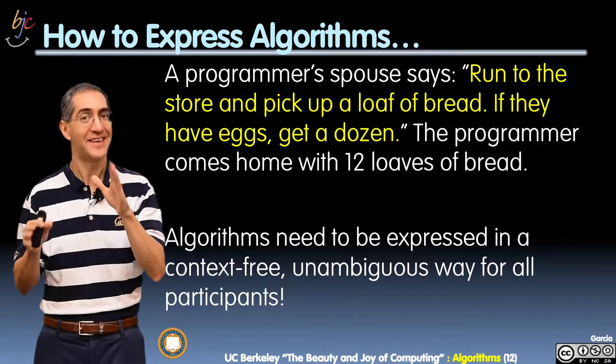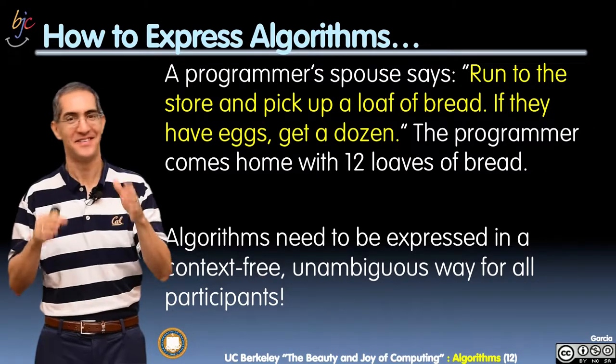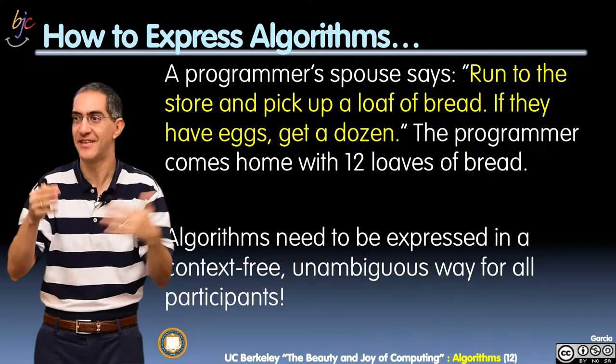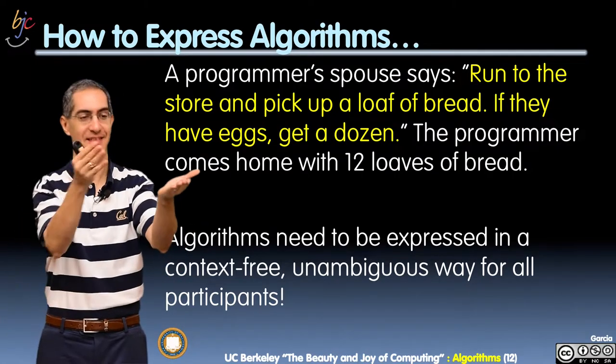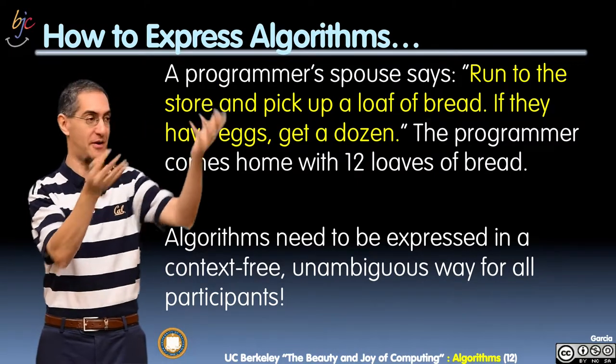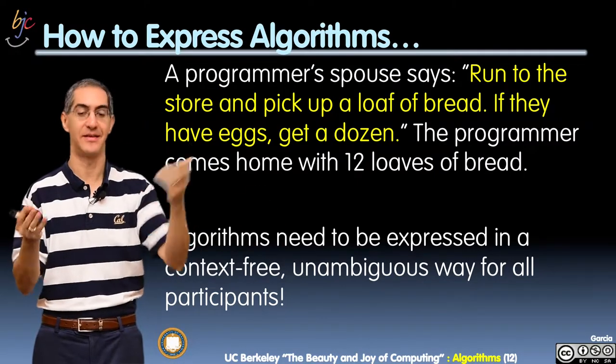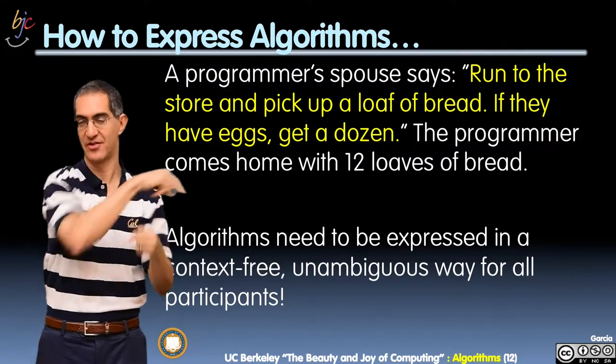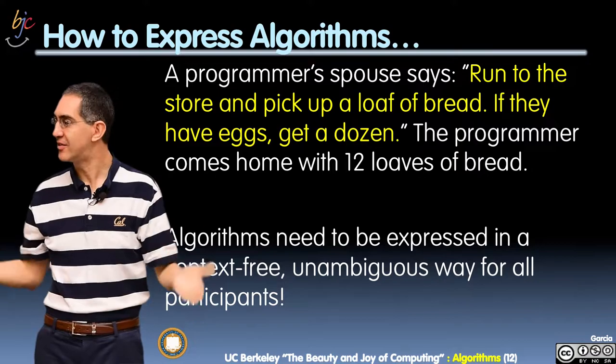And the person returns with 12 loaves of bread. I'll wait, I'll wait for the reaction there. You see? What do they mean? They meant 12 eggs, right? A dozen eggs. If they have eggs, they said, you know, eggs, get a dozen. It doesn't refer to the thing you just recently talked about. No, but loaves were out there hanging as a possible what they meant, right? Pick a loaf of bread. If you have eggs, get a dozen of the earlier thing I mentioned. So this is ambiguous. Language is often ambiguous.